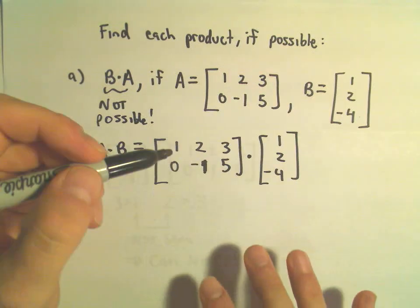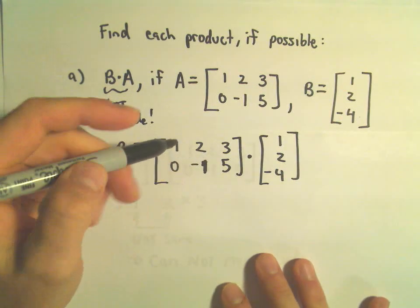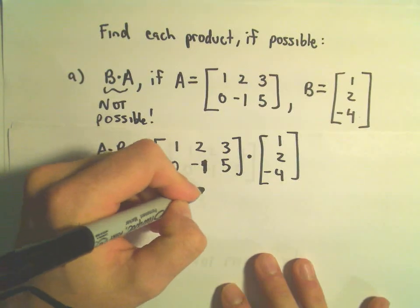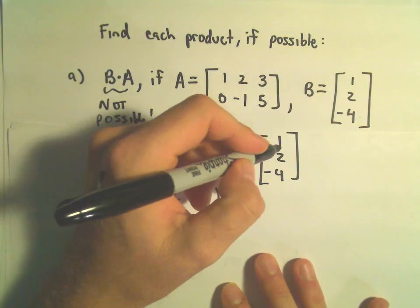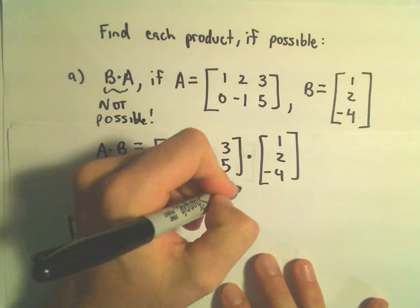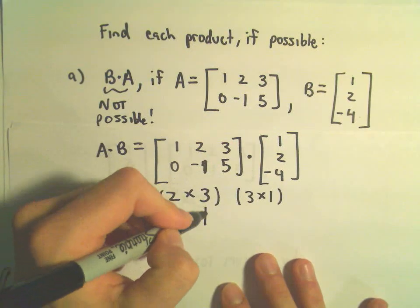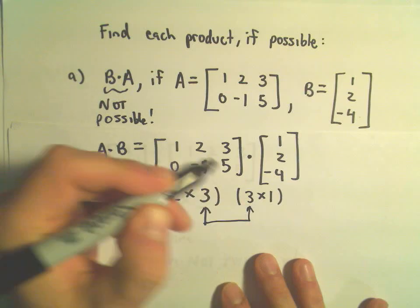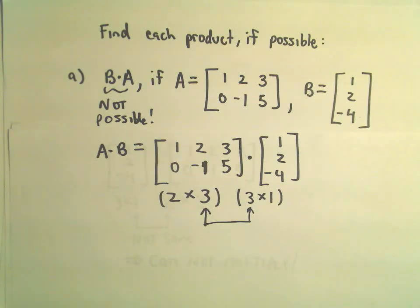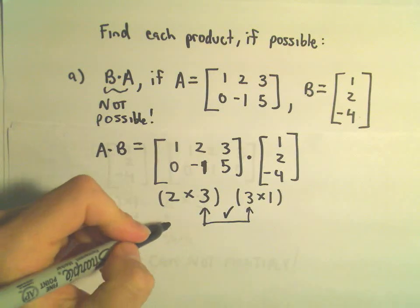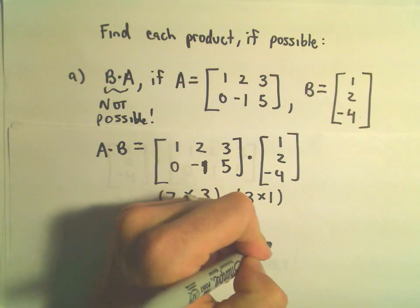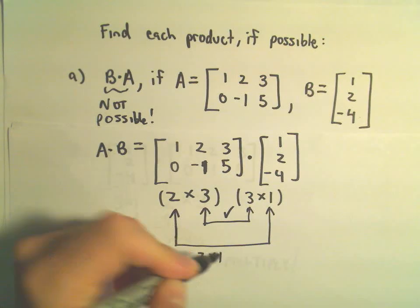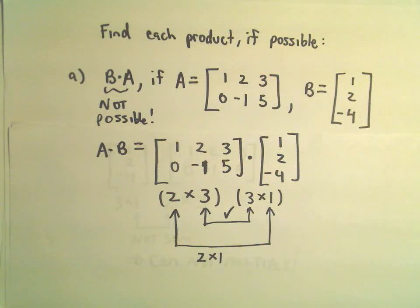So again, let's think about the dimensions. My first matrix is a 2 by 3 matrix. Notice my second matrix, matrix B, we said that's a 3 by 1 matrix. Notice the inside dimensions are the same. That means we can multiply them. The next thing I think about is the size of our solution matrix after we multiply. It says we should get a 2 by 1 matrix after we do the multiplication.